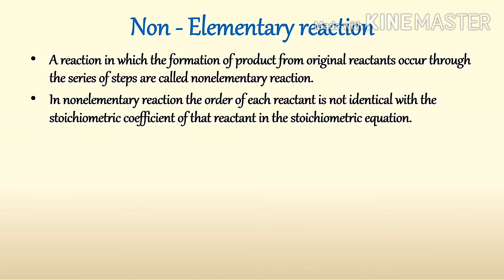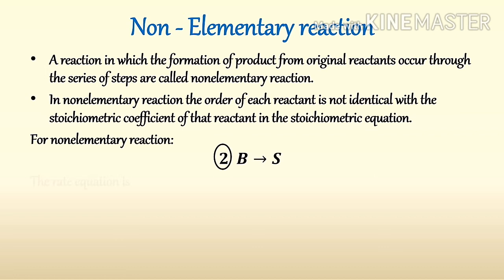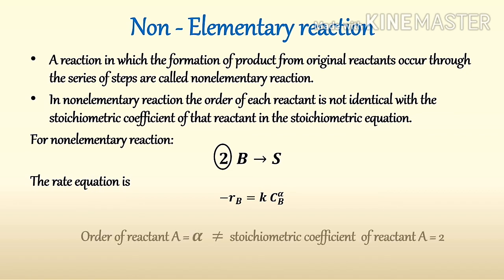Consider another non-elementary reaction: 2B → S. The rate equation can be written as -rB = k · CB^α, where α is not equal to the stoichiometric coefficient 2, since this is a non-elementary reaction.